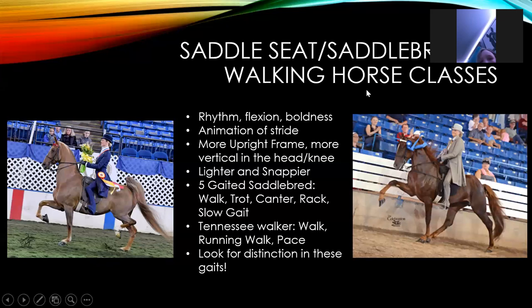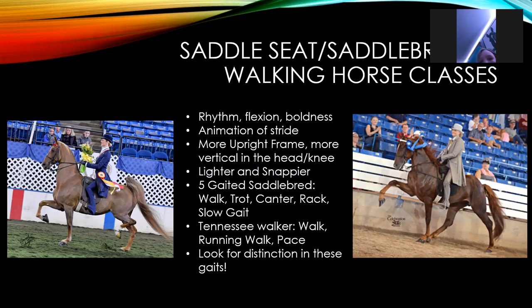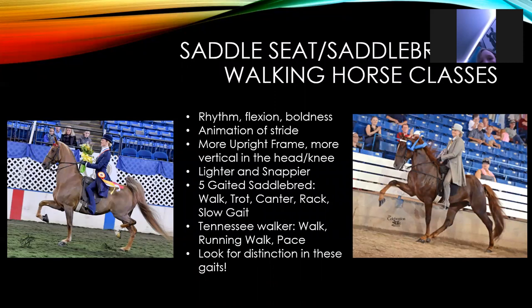The horse on the right is a Tennessee walker. They move a little differently than your saddlebreds. They have three different gaits: the walk, the running walk, and the pace. Their pace is a lateral movement where your front leg and hind leg on the same side move together. Their running walk is just a very fast version of the walk. When judging Tennessee walkers, they might look lame because their running walk has a lot of head bob — that is normal. You almost want them to have more head bob than less because of the way they move. So don't be alarmed and place them at the bottom of the class — that's how Tennessee walkers are supposed to move. Again, you want distinction in their gaits: their running walk should be more running, their pace should be a pace, and their walk should be slow, collected, and flat-footed.